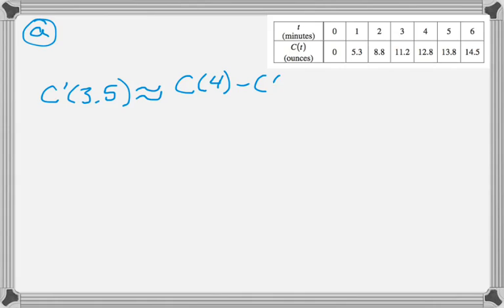So that's approximately C of 4 minus C of 3 over 4 minus 3. You go 1 to the left, 1 to the right in the table. It's the general method that we use.